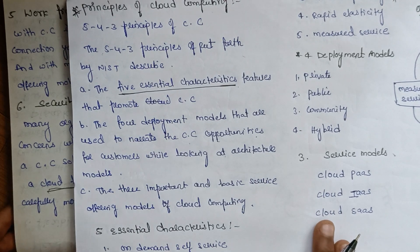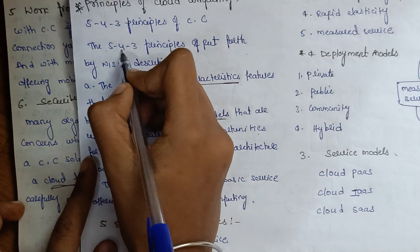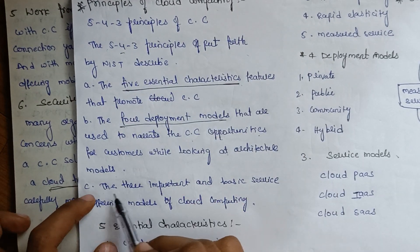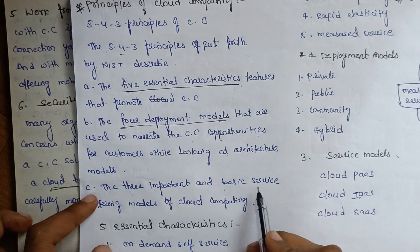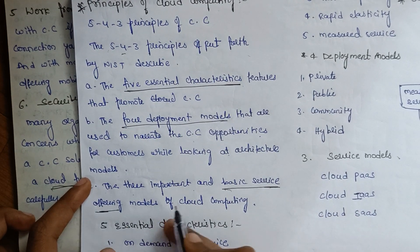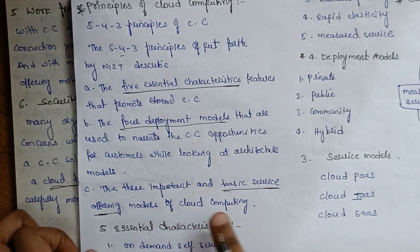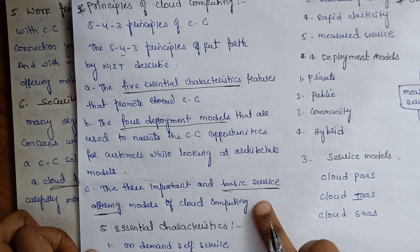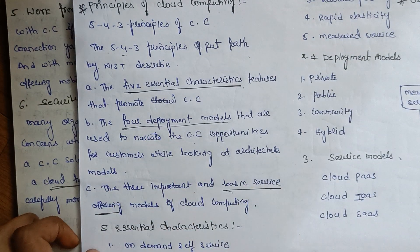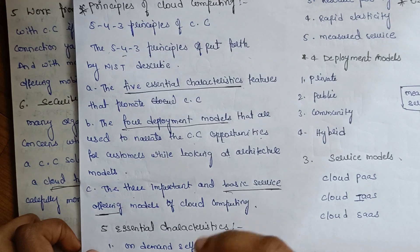What are the 4 deployment models? And next, what are the 3 important basic service offering models for cloud computing? So we have 3 basic service offerings, 4 deployment models, and 5 essential characteristics for cloud computing.